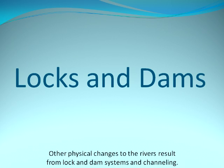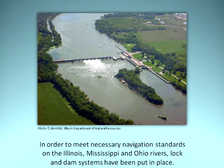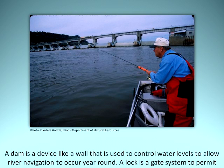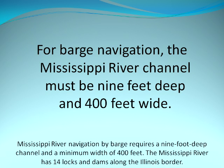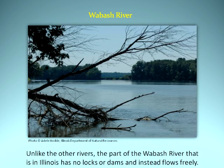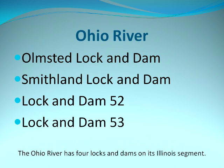Locks and Dams: Other physical changes to the rivers result from lock and dam systems and channeling. To meet necessary navigation standards on the Illinois, Mississippi, and Ohio rivers, lock and dam systems have been put in place. A dam is a device like a wall used to control water levels to allow river navigation year-round. A lock is a gate system to permit boats to pass by the dam and place them in the appropriate water level upstream or downstream. Mississippi River navigation by barge requires a 9-foot deep channel and a minimum width of 400 feet. The Mississippi has 14 locks and dams along the Illinois border, the Illinois River has 4, the Wabash has none and flows freely, and the Ohio River has 4 locks and dams on its Illinois segment.